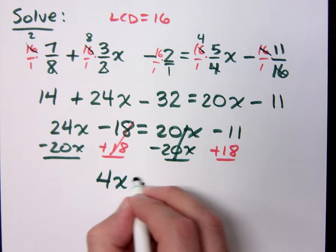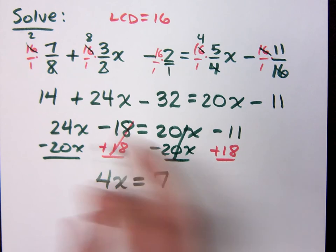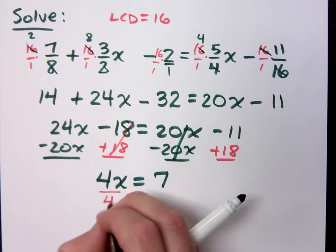I mean, 4x equals 7. Yeah, 4x equals 7. So finish this, and what does x equal? Seven or four.